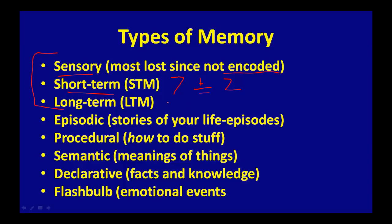So that's basically your information processing portion of memory. Then you have different types of memory. There's episodic memory — that's going to be stories of your life, like episodes of a television show. It's going to be the episodes of your life. Episodic memory.